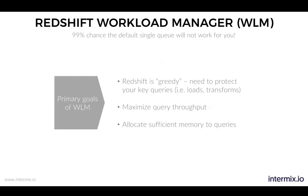We'll go into detail on what those are and also make sure you maximize your query throughput. The key is that every query that runs at runtime has a slot and doesn't wait. They also need sufficient memory to run. If they do not have sufficient memory, they will fall back to disk. That will make them slow, and it also increases IO usage, which means the entire cluster will slow down. This is why using WLM will give you the biggest bang for the buck to get high throughput of fast queries.